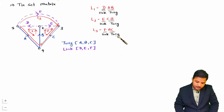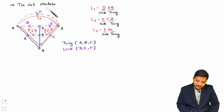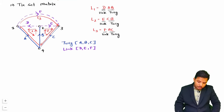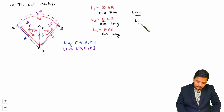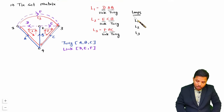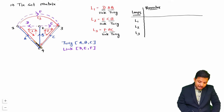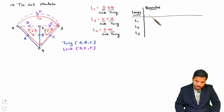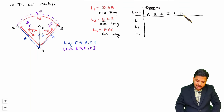Based on these fundamental loops we can form the tie set matrix. Vertically we write the tie set loops — L1, L2, L3 — and horizontally we write the branches. There are six branches, so we write A, B, C, D, E, and F.